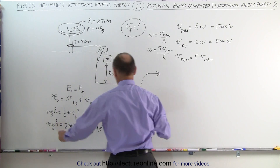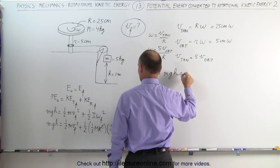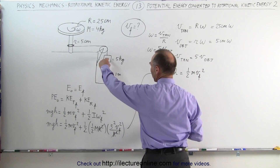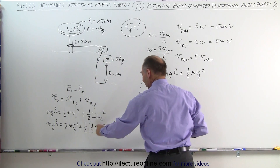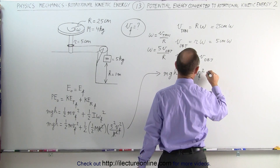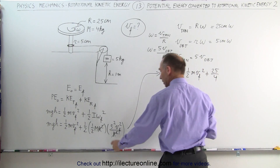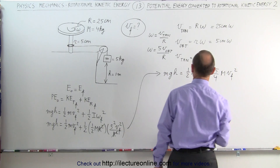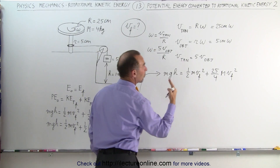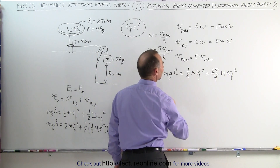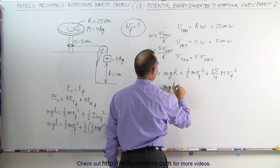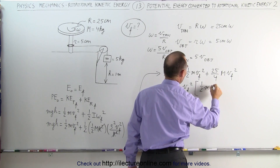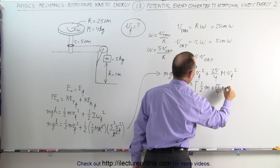Moving over, on the right side we have: MGH equals one-half M·V_final² — the translational kinetic energy of the object — plus 25/4 times the mass of the disc times V_final². We're trying to find V_final, so we factor out V_final²: MGH equals V_final² times (one-half times the mass of the object plus 25/4 times the mass of the disc).